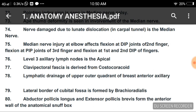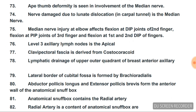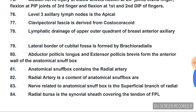Median nerve injury at the elbow affects flexion at the DIP joint of the second finger and flexion at the PIP joint of the third finger. Remember: index finger — DIP flexion is affected; middle finger — PIP flexion is affected. Level 3 axillary lymph nodes are apical. Clavipectoral fascia is derived from costocoracoid.